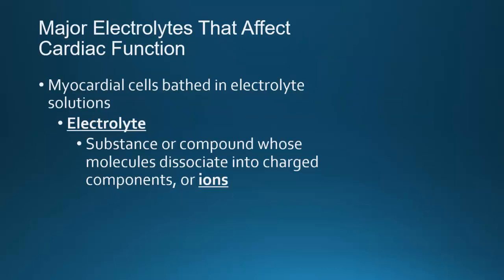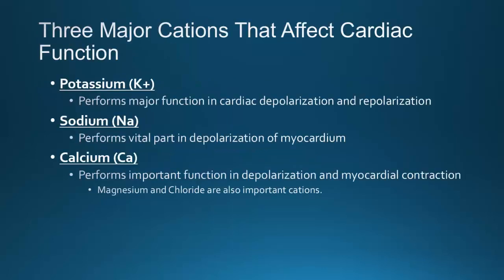In order for depolarization to occur and for the electrical conduction cells to do what they're supposed to do, electrolytes play a huge role. An electrolyte is a substance or compound whose molecules dissociate into charged components or ions. When it produces a positive charge ion, this is called a cation. Negatively charged ions are called anions. Your three major cations or positively charged ions that affect cardiac function include potassium, sodium, and calcium.